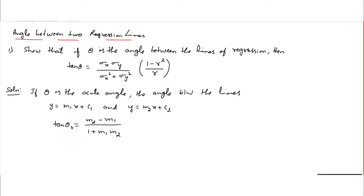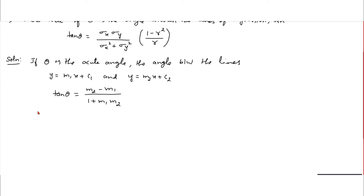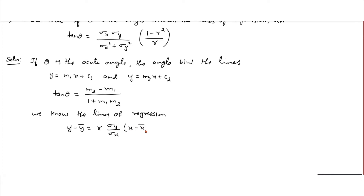This formula has to be applied for the lines of regression. We know the lines of regression: y minus y-bar equals r times sigma y by sigma x, times x minus x-bar — let us take this as equation 1. And the second regression line — let us take this as equation 2.